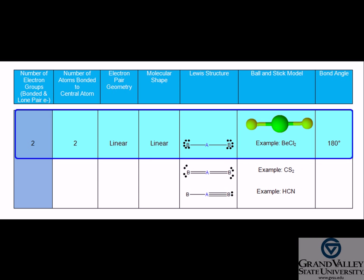In this molecule, there are two atoms bonded to the central atom and there are no lone electron pairs on beryllium. Therefore, the electron pair geometry and molecular geometry is linear with a bond angle of 180 degrees.